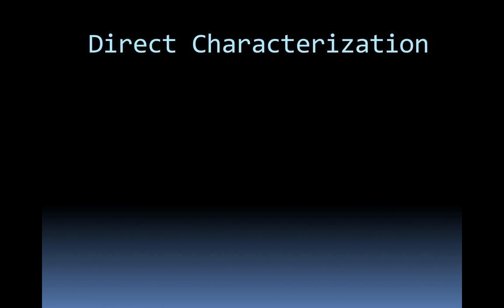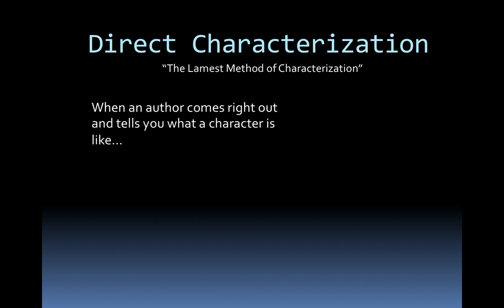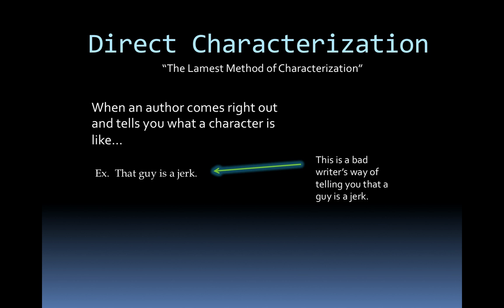The direct method of characterization is what I like to consider the lamest method of characterization. It's when the author just says what the character is like — the author just writes, 'That guy is a jerk.' Sure, we know the guy is a jerk, but there really wasn't any effort in trying to come to that conclusion on our own. It's a bad writer's way of just telling you that some guy is a jerk.